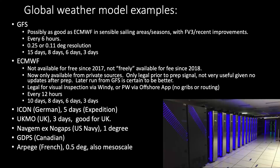The ECMWF runs every 12 hours, out to 10 days — worth looking at for eight days, seriously for six, and to the bank for three. Other models: the ICON (German, five days), UK Met Office, the old NOGAPS now called NavGem, the Canadian model, and Arpege — all available. ICON and NOGAPS are available for free and legal to use, but they're sufficiently less good than the GFS that most navigators only look at them as a distant backup.